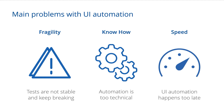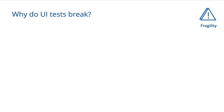The third problem area is around speed — the problem that especially in UI automation, the automation just happens way too late in agile sprint cycles. I'll go through those three buckets in a bit more detail so you understand the concept better.